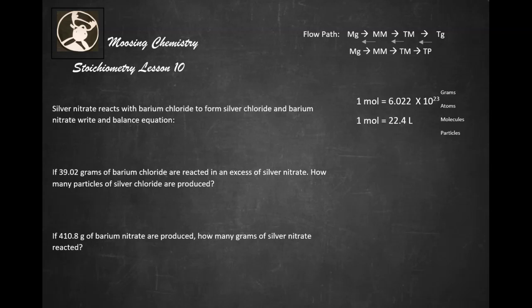So silver nitrate is going to be AgNO3. Barium chloride is going to be BaCl2. It's going to form silver chloride, which is AgCl, and barium nitrate, which is Ba(NO3)2.